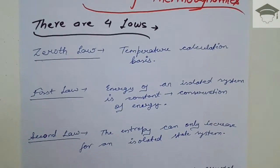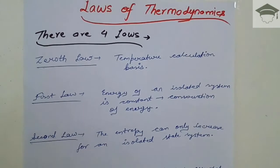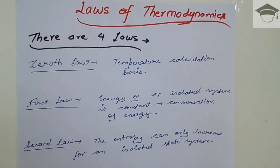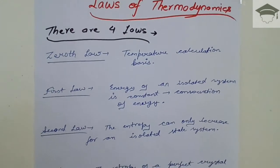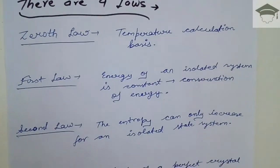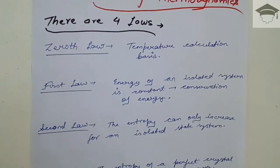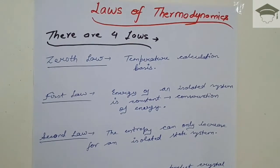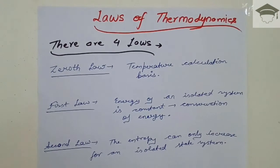Now the second law of thermodynamics states that the entropy of an isolated system can always increase. It should be increasing. If the entropy is not increasing, then the process is not feasible or the process cannot occur. So for the process to occur, the entropy should always increase.